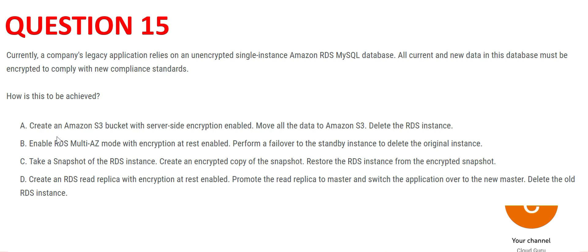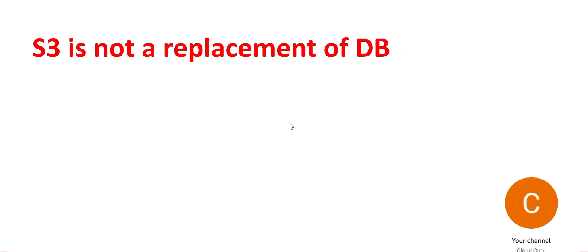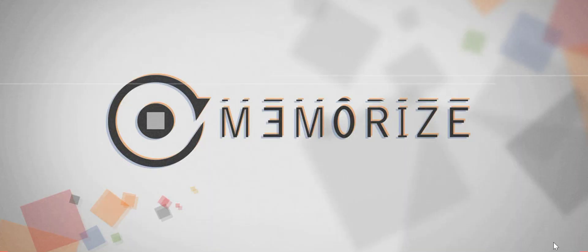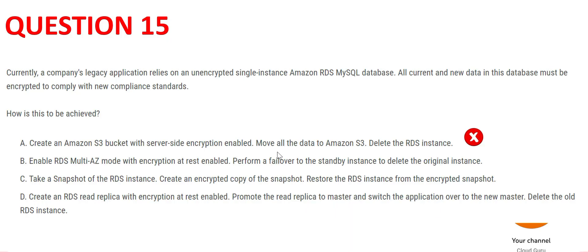Option A suggests creating an S3 bucket with server-side encryption and moving all the data to S3. The problem is this is a database use case — you still want a database as the final product, not S3. The option even says to delete the RDS instance and use S3, but S3 cannot act as a database. It is not a replacement for a database. Please remember this — S3 is not a database replacement. So Option A is wrong.